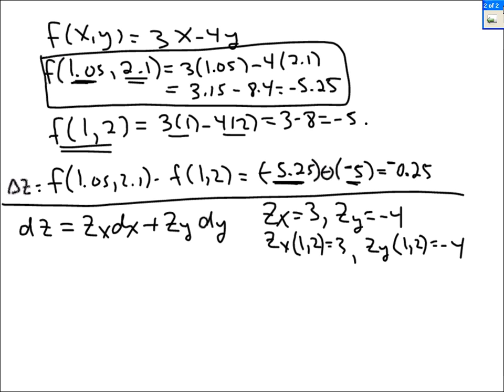We're finding dz at 1.05, 2.1. And z sub x we're finding that at 1,2. z sub y is at 1,2. So dz is z sub x at 1,2, which is 3 times dx, which we'll talk about in a moment, plus z sub y at 1,2, which is negative 4 times dy.